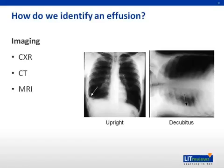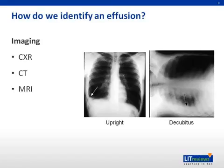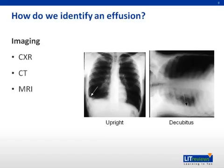If your history and physical exam suggests an effusion, imaging is the appropriate next step. A simple chest x-ray will help you answer questions like: is the effusion large or small? Unilateral or bilateral? Also, is the effusion loculated? Loculation, or encapsulation, is most common when the underlying effusion is due to hemothorax, hydrothorax, chylothorax, or tuberculous pleuritis. The key findings to look for on an upright chest x-ray are blunted costophrenic angles, as shown by the arrow here.